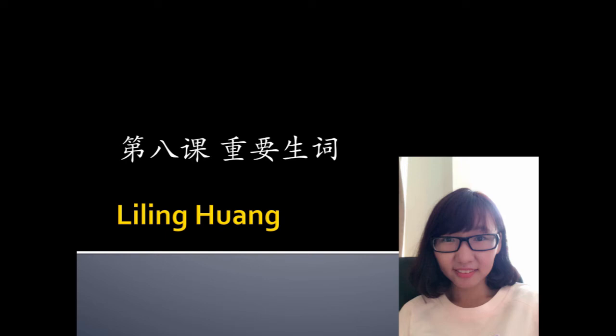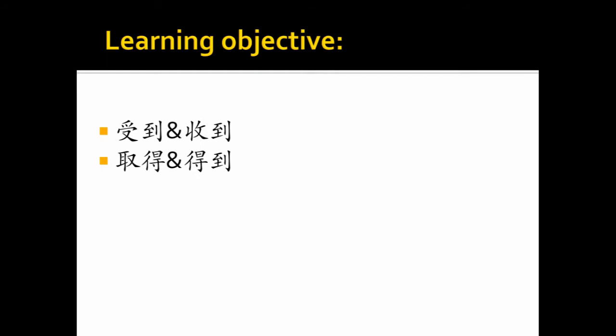大家好,我是黄老师。今天我们一起来看第八课的重要生词。We're going to compare two pairs of words. The first pair, to receive, 受到,收到。The second pair, to obtain, 取得,得到。Before I introduce the usage of the first pair, I would like to introduce you to a very famous Chinese singer, 邓丽君。